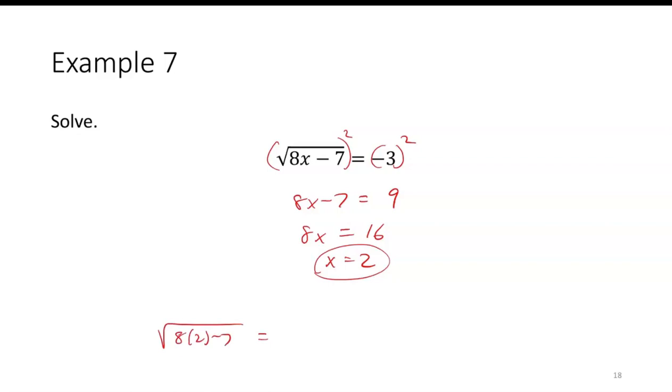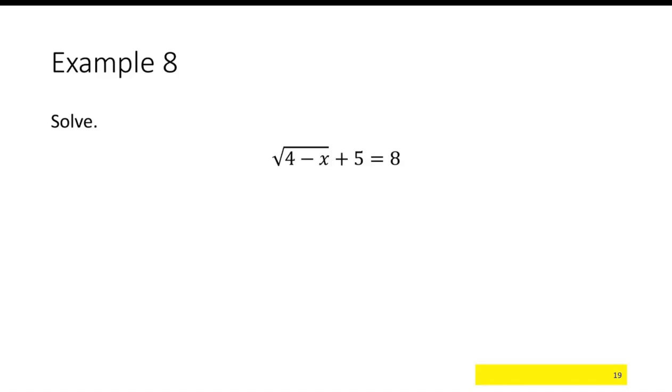But when I check it, 8 times 2 minus 7 gives me the square root of 16 minus 7, the square root of 9, is positive 3. And that's not the same thing as negative 3. So this would be an extraneous solution. There actually are no solutions for this problem, because this positive square root is not going to be equal to negative 3.